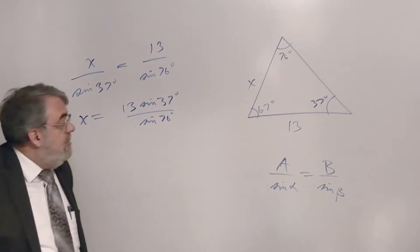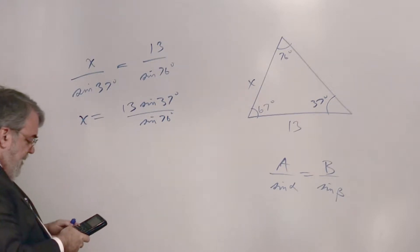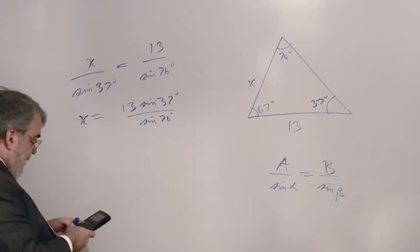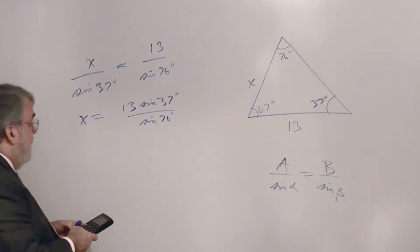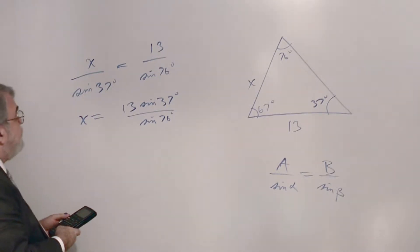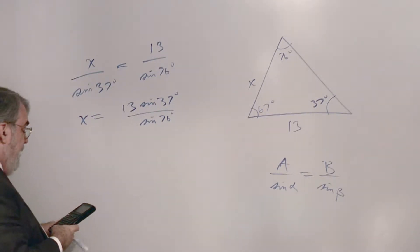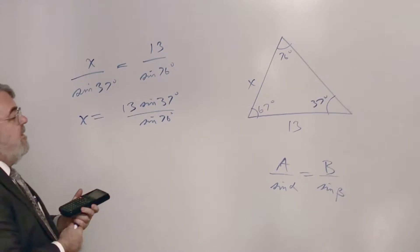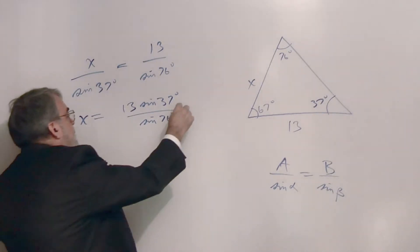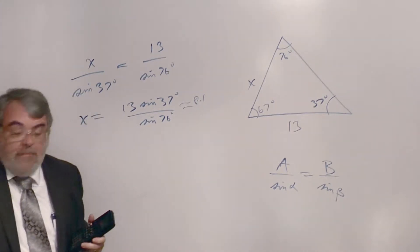Let's calculate that: 13 sine 37 divided by sine 76. x is about 8.1. I'll estimate it as 8.1, so we've got that length.